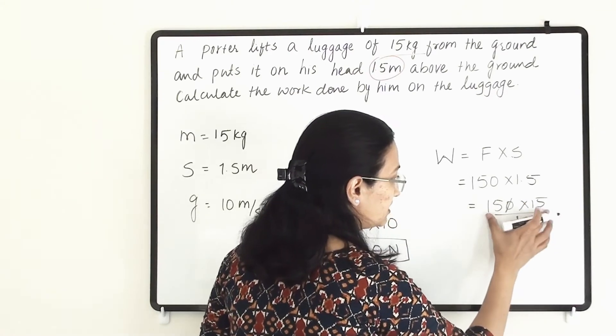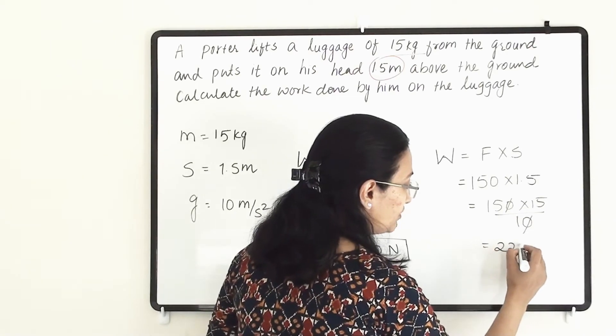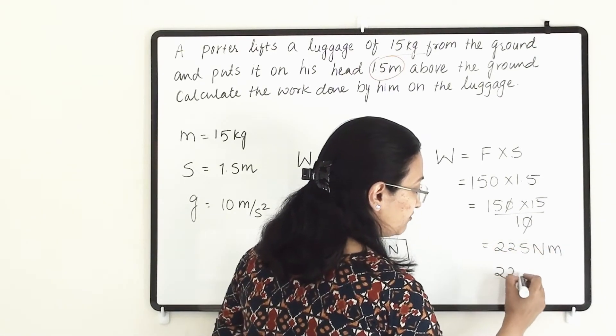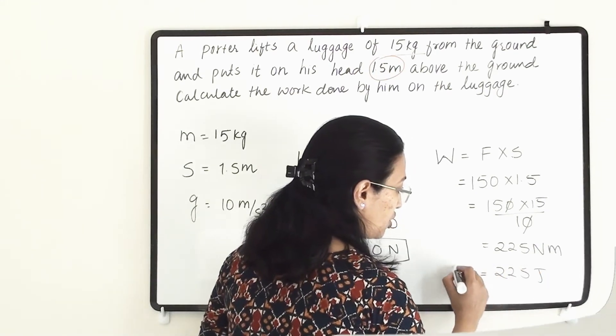So 1 and 0 we can cut it out. And 15 into 50 is 225 newton meter or 225 joule work has been done on this object.